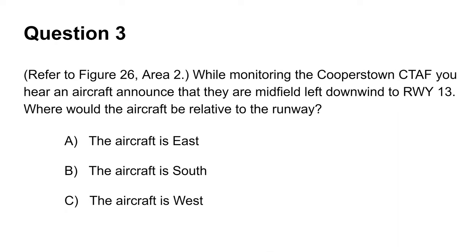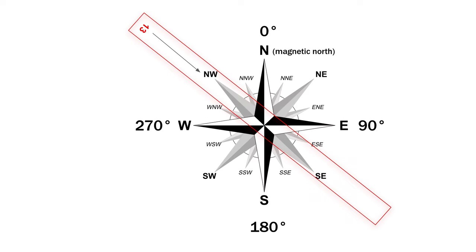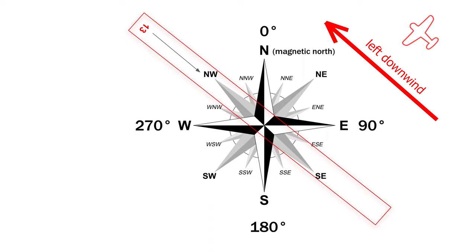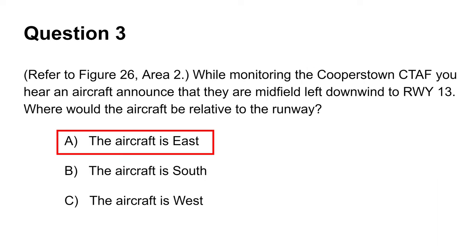The third question asks you to identify the position of the aircraft relative to the runway, given that it is going midfield left downwind to runway 13. It is not even necessary to look at the sectional chart. Runway 13 will go in the 130 degree direction from northwest to southeast as indicated by the arrow. Left downwind means that the plane is to the left side and heading opposite and midway of the landing runway. This would place the aircraft east of runway 13, making choice A the answer.